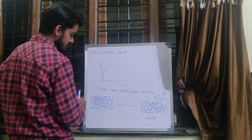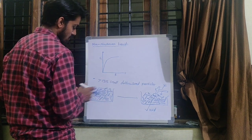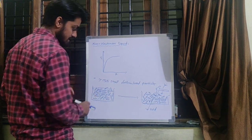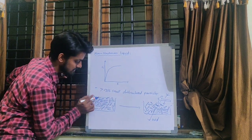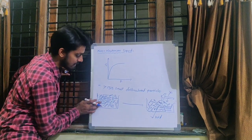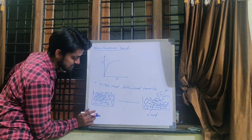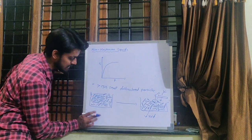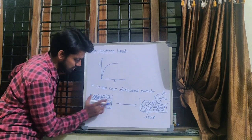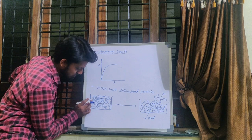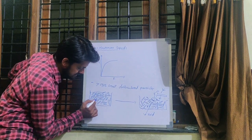Consider a system having defloculated particles — for example, corn starch particles with a concentration of more than 55 percent. In this system, the crystals are all over in the container and the liquid is in between those crystals.